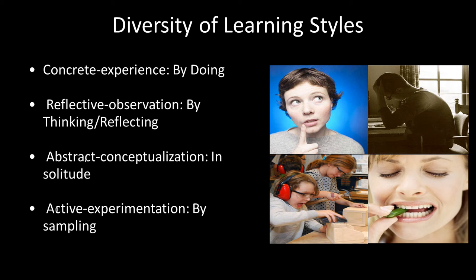A lot of people get these confused, but reflective observation is different from abstract conceptualization. The abstract conceptualization learning style describes individuals who tend to learn better in solitude — not as participatory in the group, but preferring to withdraw, study, and gain understanding on their own. The final learning style is active experimentation: this is the individual that doesn't want the lecture, doesn't want to read the instructions, and just wants to dive right in and figure out what works. People tend to move in and out of these learning styles as they engage with new information.